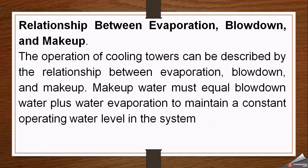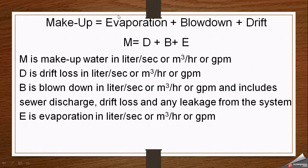There is a relationship between evaporation, blowdown, and makeup, because makeup water normally covers the losses from evaporation, drift losses, and blowdown. The expression used to calculate the amount of makeup water required is: makeup water = evaporation + blowdown + drift. This must equal makeup water to maintain a constant operating water level in the system.